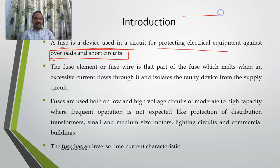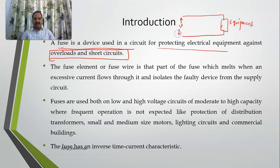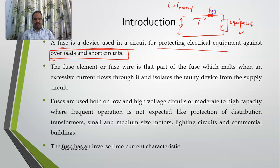Consider some equipment which is to be protected. Normally we provide it some voltage so it works. If a heavy current is flowing and if the current I exceeds the normal value I_normal, then the equipment gets damaged. To overcome that, we place a small material here — we call it a fuse. Whenever the current is higher than the normal current, it will automatically blow off, thereby protecting the equipment. This is the simple concept of a fuse.